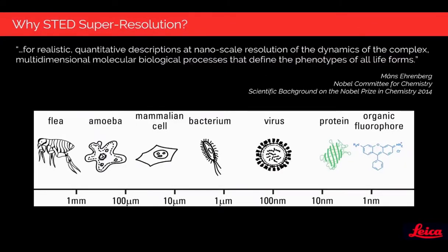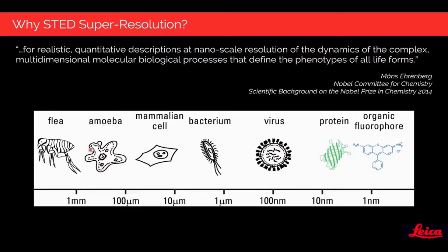When we want to do STED, we want to get quantitative descriptions at the nanoscale of the dynamics of complex molecular biology processes that define the phenotypes of all life forms. This means we can go way below the diffraction limit with molecular specificity to study structure and dynamic interactions — a level of detail not achievable with conventional far-field fluorescent microscopy. We can also access information on these structures within the context of cells, tissue, and organisms.